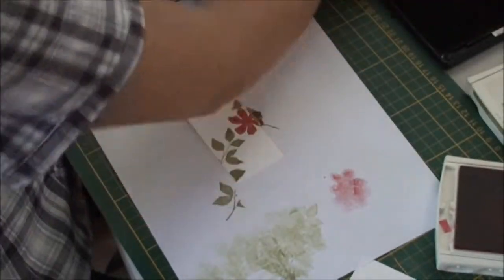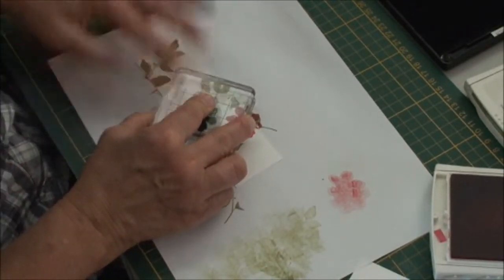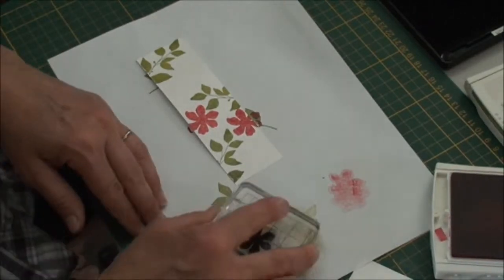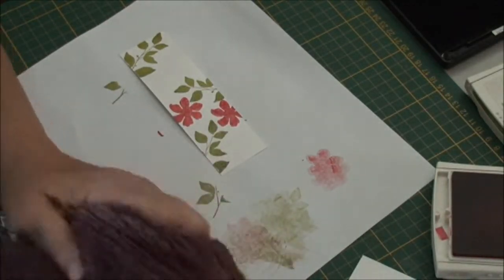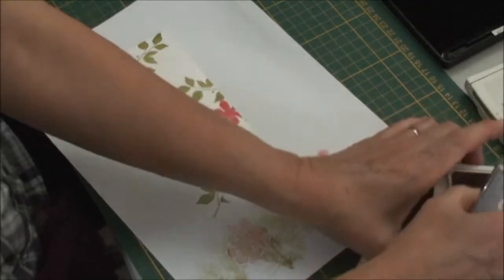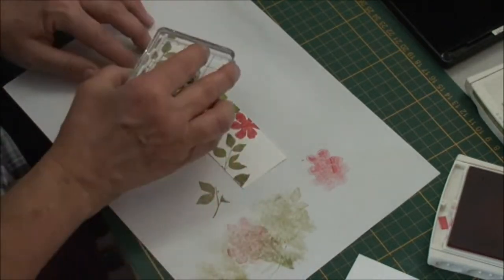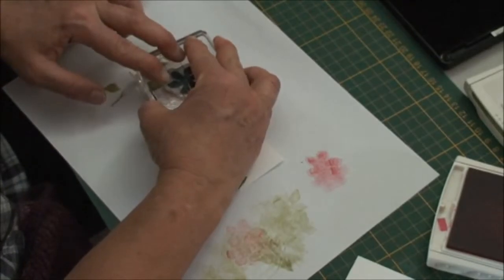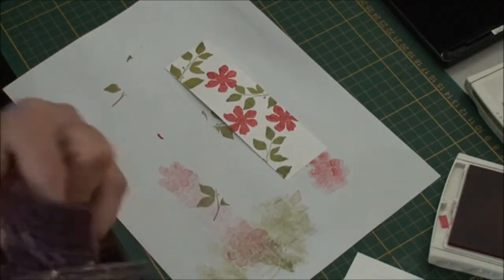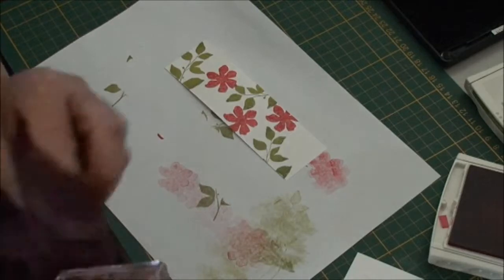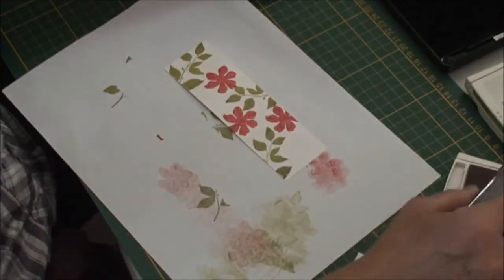Okay, again start off with it off the card. Give it a clean. Once again, give it a clean. I find a wet washer before I put it in the stamp cleaning pad just keeps the pad a little bit cleaner. And let's see, we'll stagger that a little bit. Once again, give it a clean, and one more time.